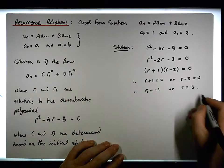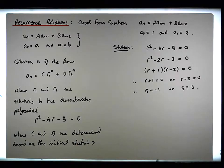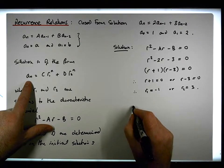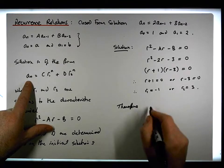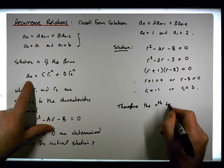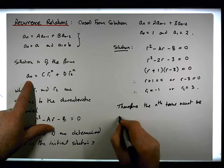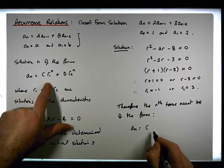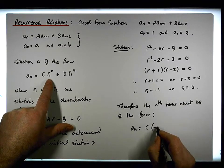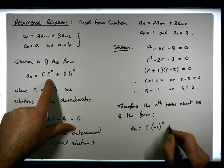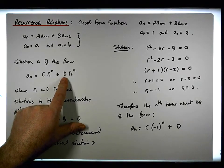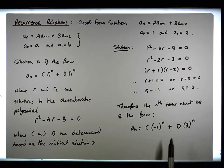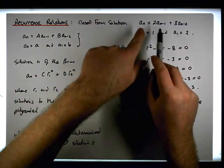We'll call this r1, we'll call this one r2 — it doesn't matter which ones we call which. So now our characteristic solution must look like: the nth term must be of the form a_n equals some number c times r1 raised to the power of n, which is minus 1 raised to the power of n, plus some number d times r2, which is 3 raised to the power of n. So we need to find appropriate c's and d's, and then we'll have the full closed-form solution for this recurrence.